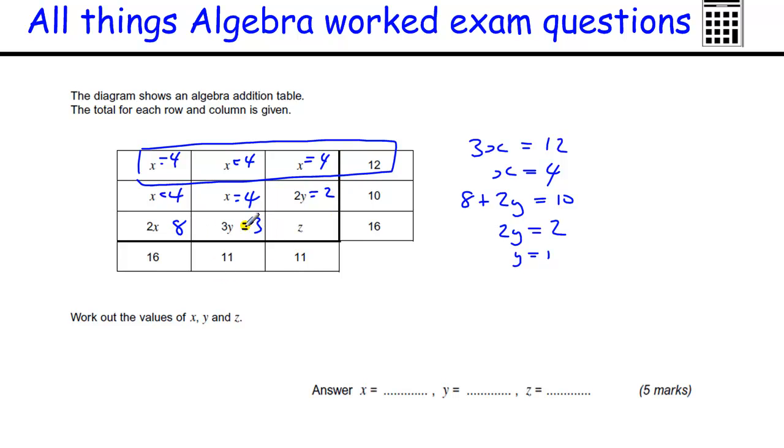That would be equal to 3. Now, I could go across here. 8 plus 3 plus z is 16. Or I could even come down here. 4 plus 2 plus z is 11. They'll both give you the same answer, so we've got 11 plus something is 16, so that's going to be 5. Or 6 plus something is 11. That's also going to be 5. So z is going to be 5. Y is 1. X is 4. Then that's worth 5 marks.